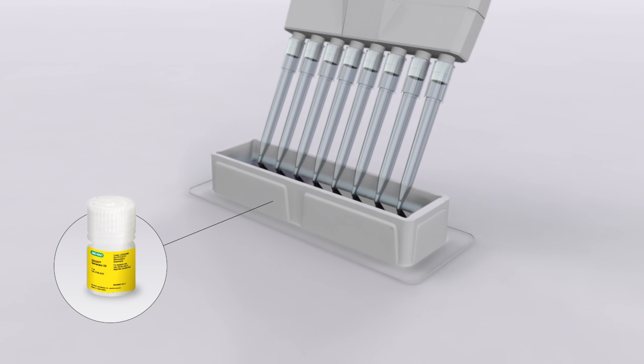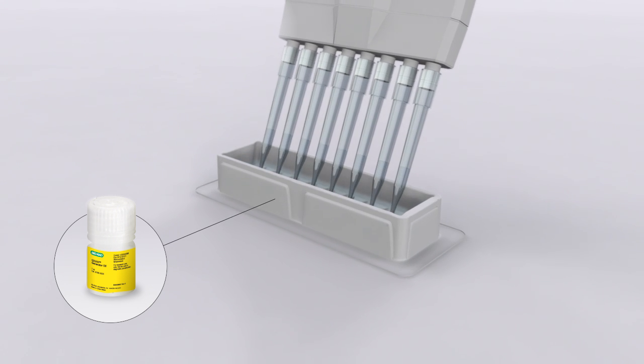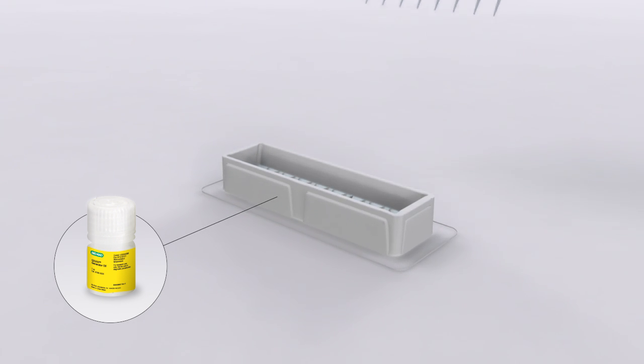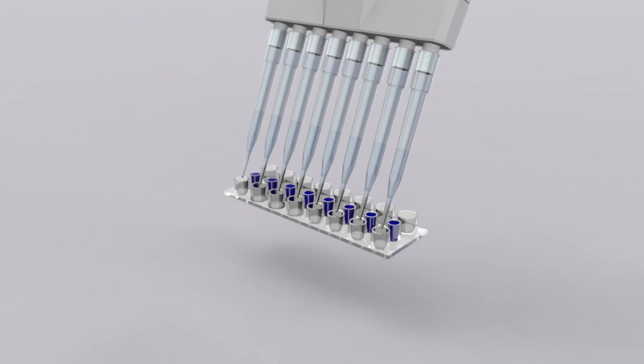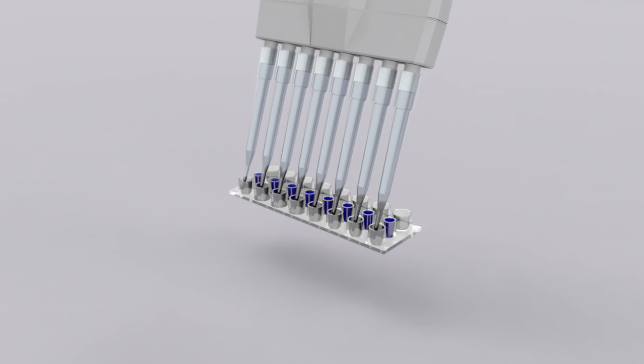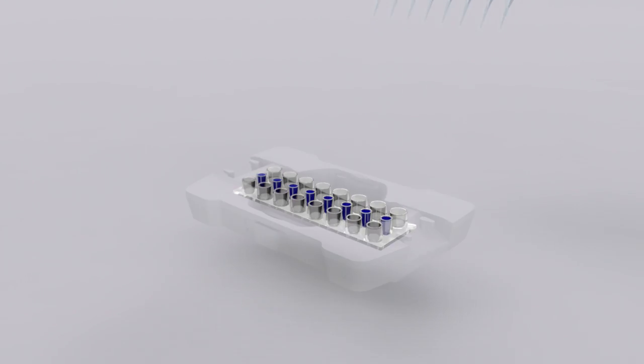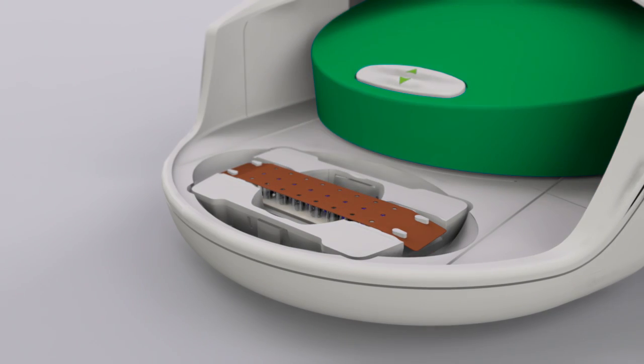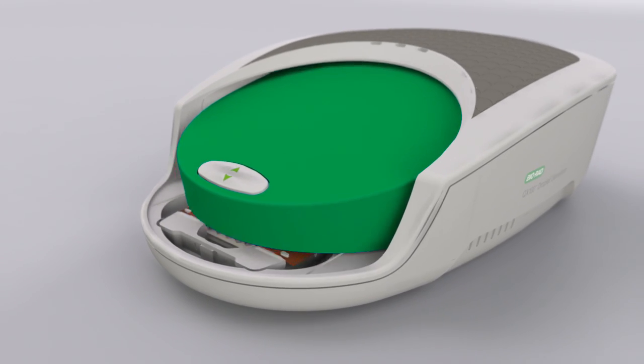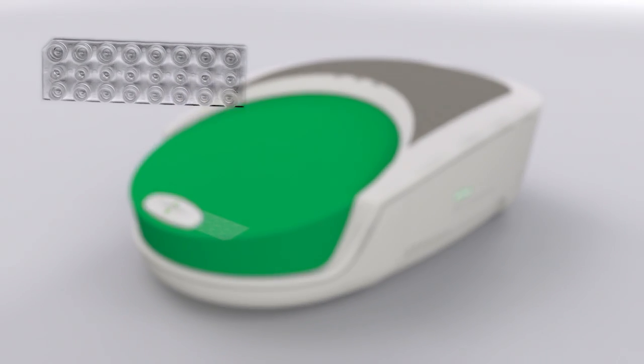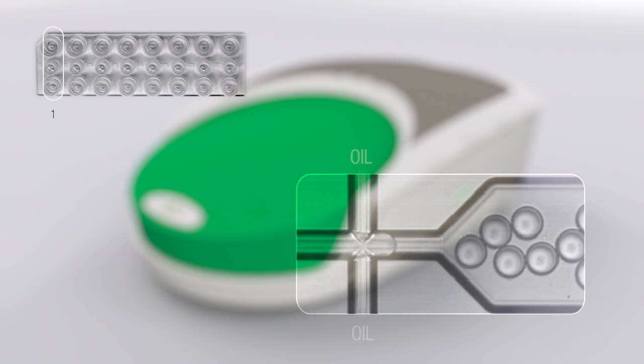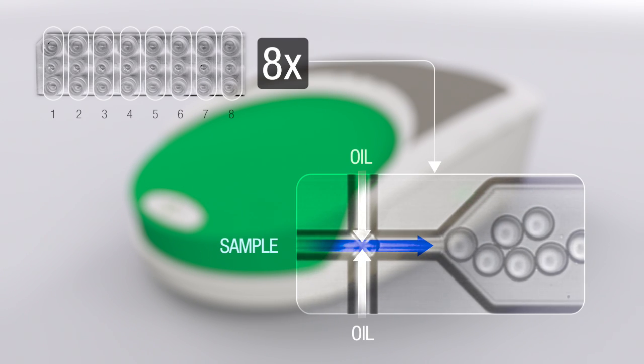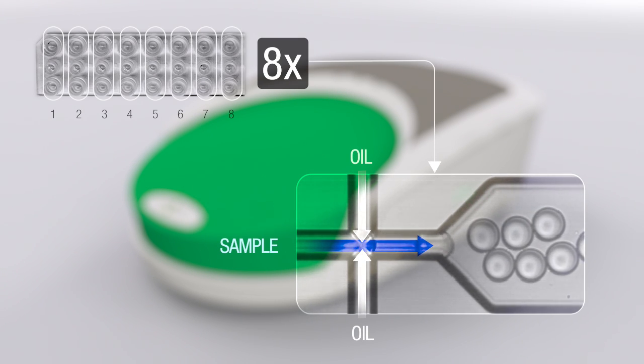Droplet generation oil is then loaded into corresponding channels in the cartridge. There are 8 oil channels, one for each of the samples. Once the cartridge is loaded with prepared samples and oil, it is placed in the QX200 droplet generator. Using microfluidic technology, the droplet generator combines the samples and oil to create an emulsion of approximately 20,000 mono-sized droplets for each sample.